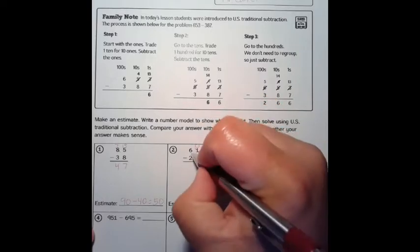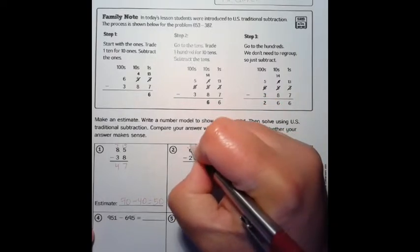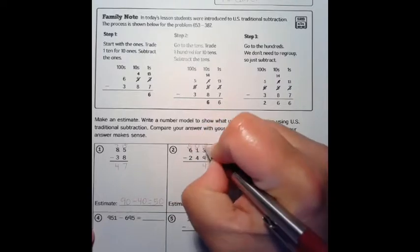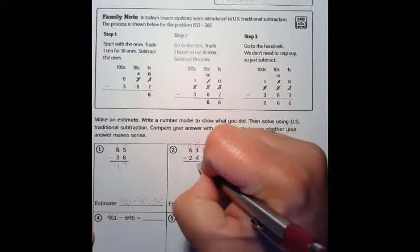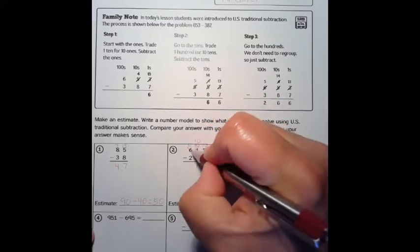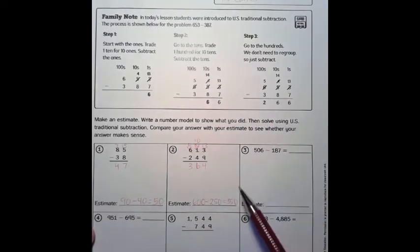Now 0 tens take away 4 tens we cannot do that, so we're going to trade again. We're going to take away one from the hundreds, from the 6, make it a 5, trade it in for 10 tens. That would become 10. 10 take away 4 is 6, 5 take away 2 is 3. 364, which makes sense because it's close to our estimate.